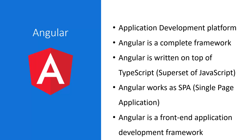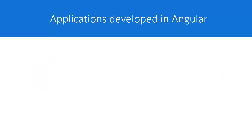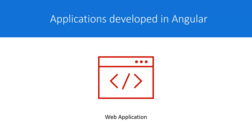Angular is a front-end application development framework. In web applications, we generally have the front-end, then some back-end, and then a database. In a typical architecture we have the front-end application, a Web API, and the database. The Angular framework is used only for the front-end. For the Web API you can use any other libraries or frameworks available — it is not necessary to use any specific Web API framework to work with Angular.